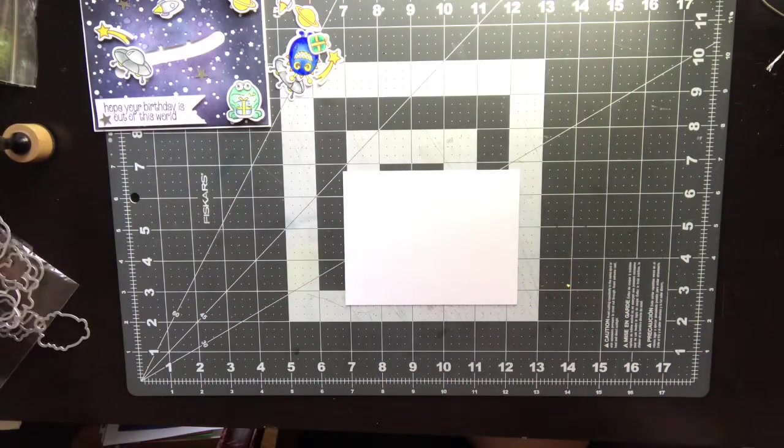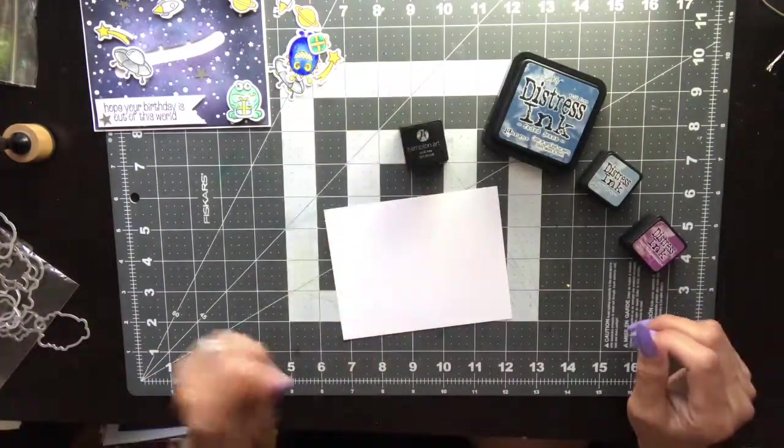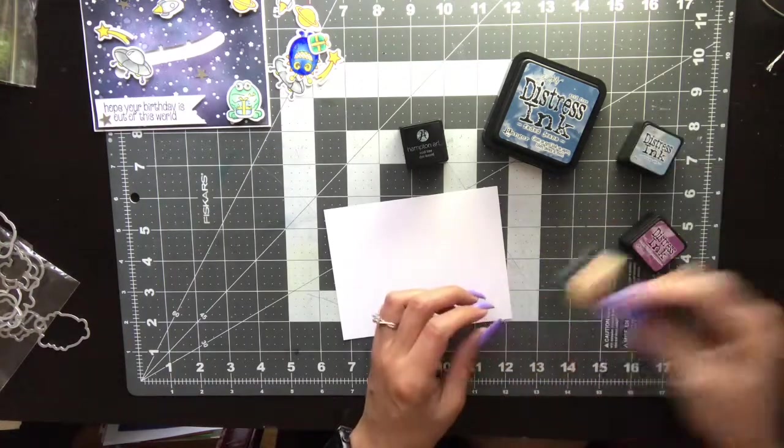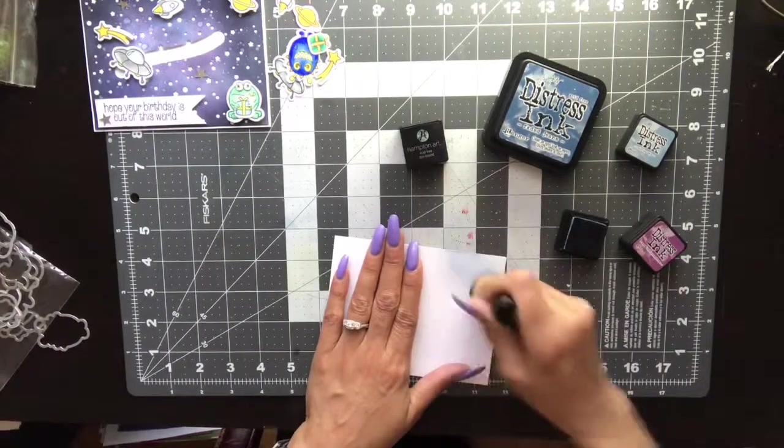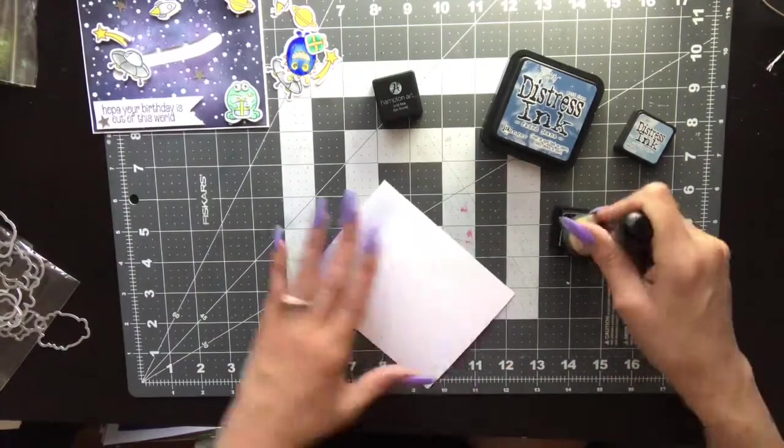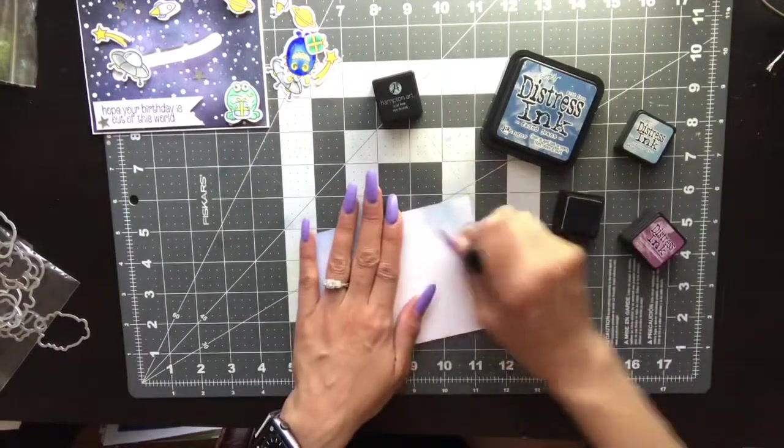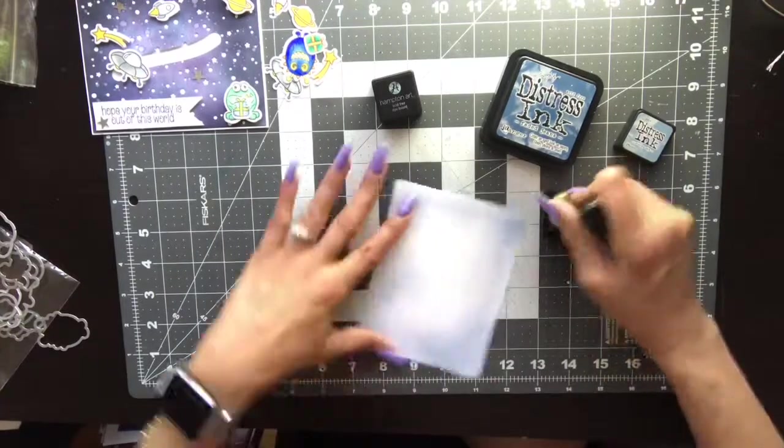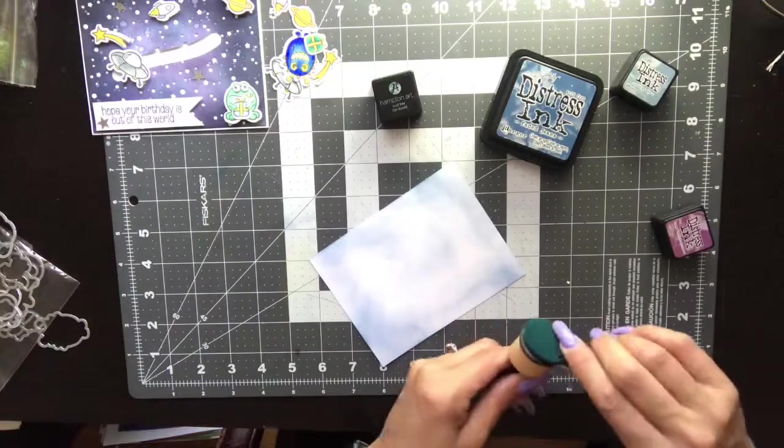Using another piece of Neenah Solar White cardstock, I pulled out my distress inks from Tim Holtz. The colors that I used were Stormy Sky, Faded Jeans, Seedless Preserves, and Black Soot. Using my blender and applying the ink with the lightest color first, very softly.